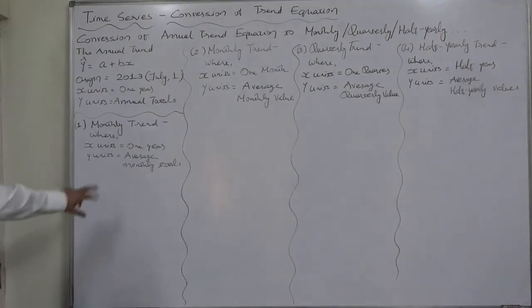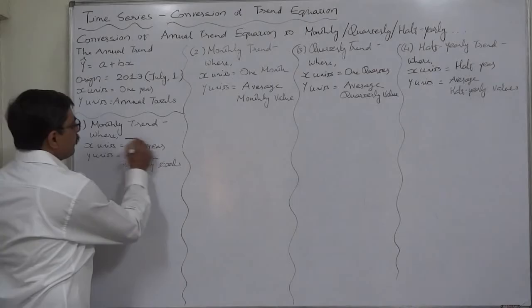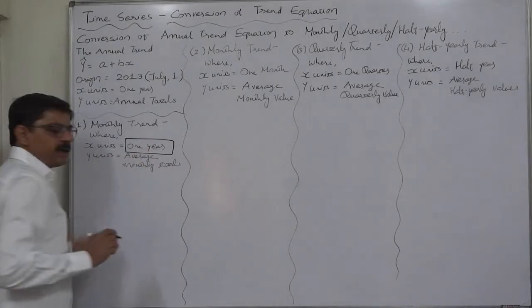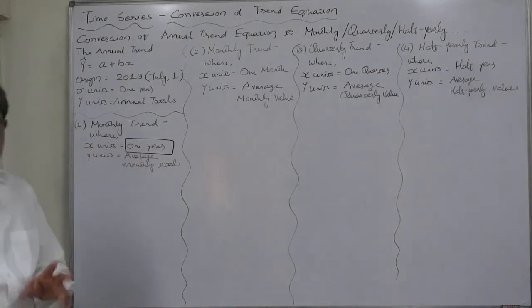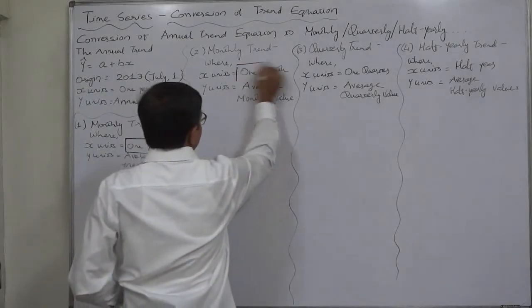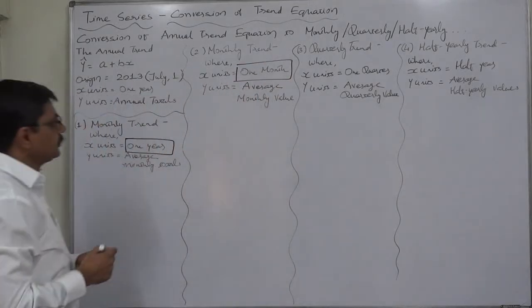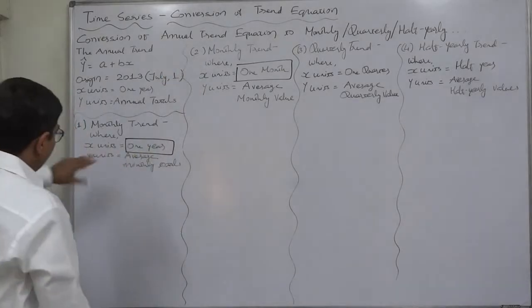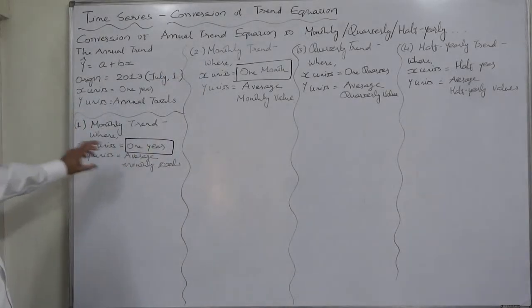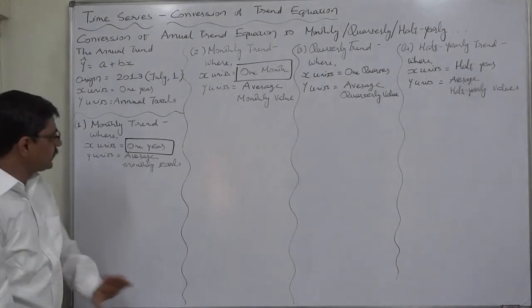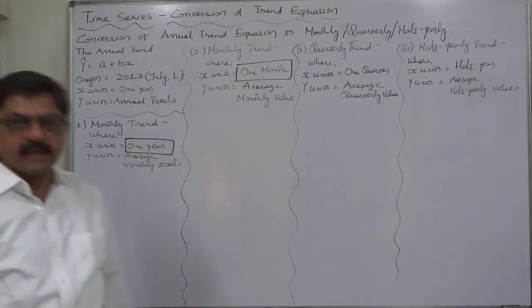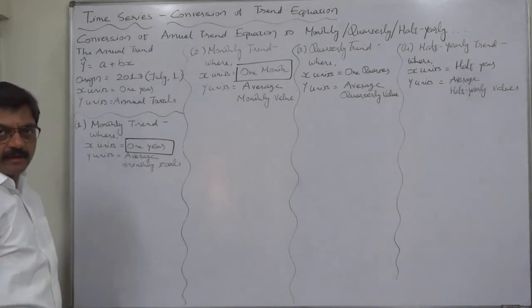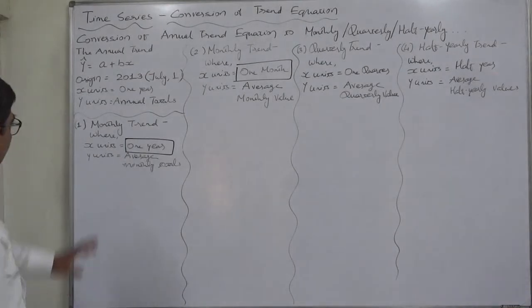The first is monthly trend where x units are one year only, that means x are not monthly. Later on we are going to discuss x units one month, but first let's discuss where the x units are one year and y units are average monthly trends.